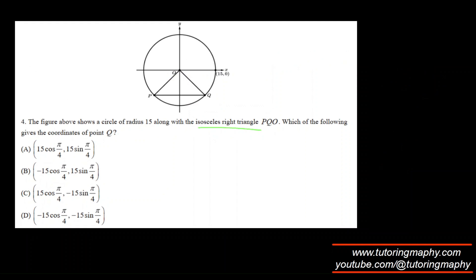For the isosceles right triangle, the angles are 45, 45, and 90 degrees. This line bisects the 90-degree angle, so it also creates a 45-degree portion. We are looking for the total angle to point Q. Since it is 45 degrees short of the full 360, the angle is 360 minus 45, which is 315 degrees.